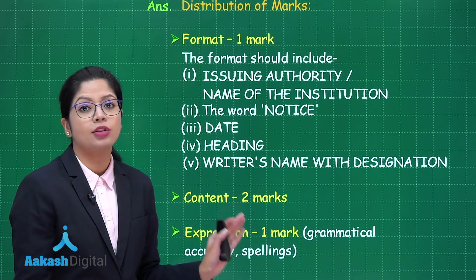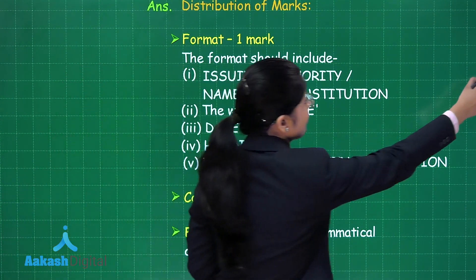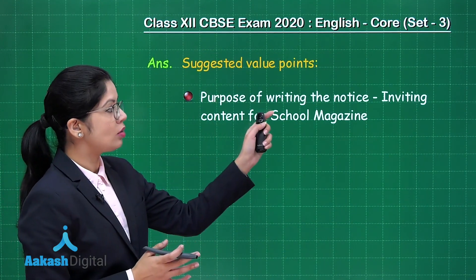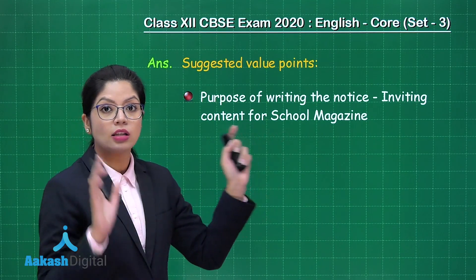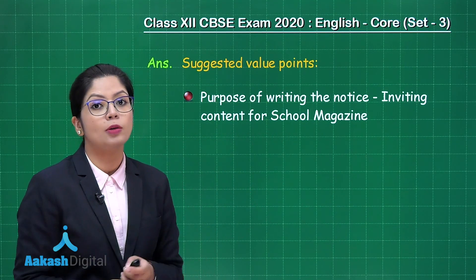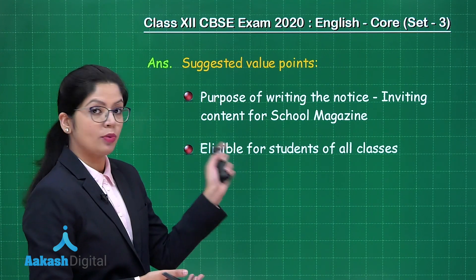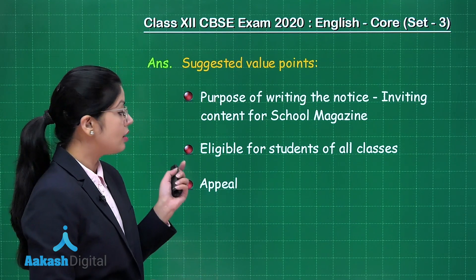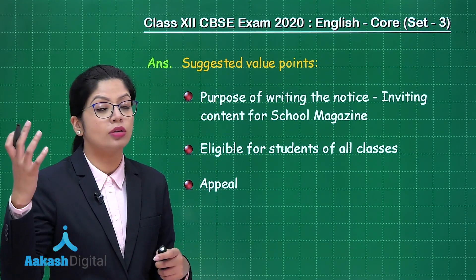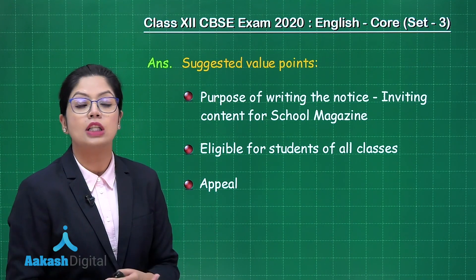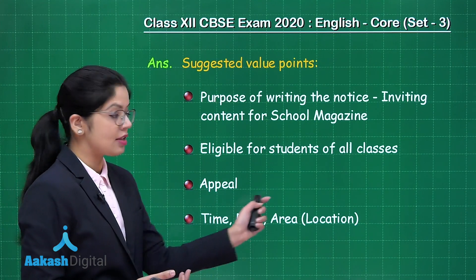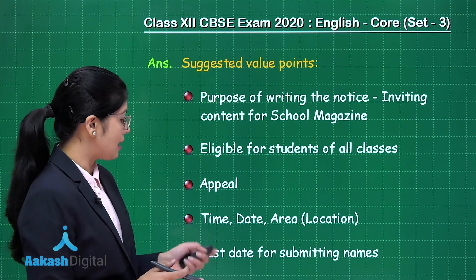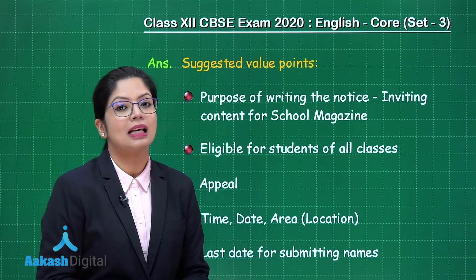Expression refers to grammatical accuracy and spellings. For those who have a tendency to go overboard with writing, keep a check on the word count. The purpose of writing the notice — which is inviting content for the school magazine — should be the first value point highlighted. Secondly, eligibility, which is students of all classes, has to be mentioned. Thirdly, the appeal of the notice has to be generated through the title, heading, or introductory line. Time, date, and location for submitting details should be mentioned, and lastly, the last date for submitting names should be there.